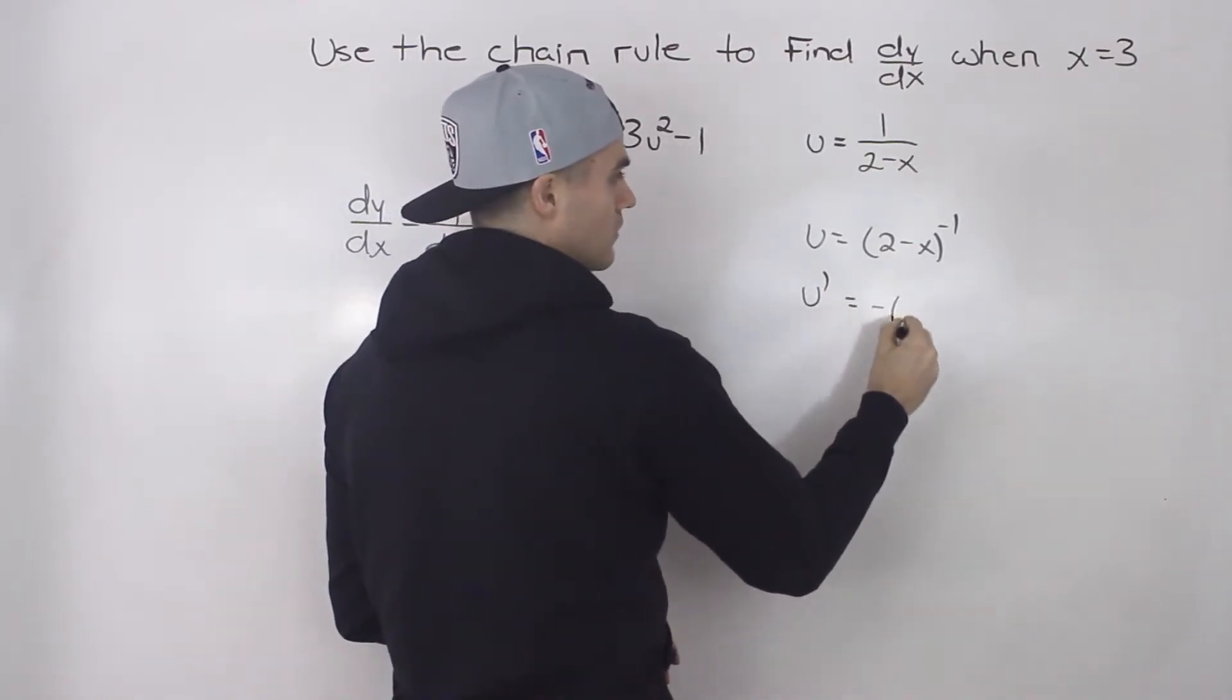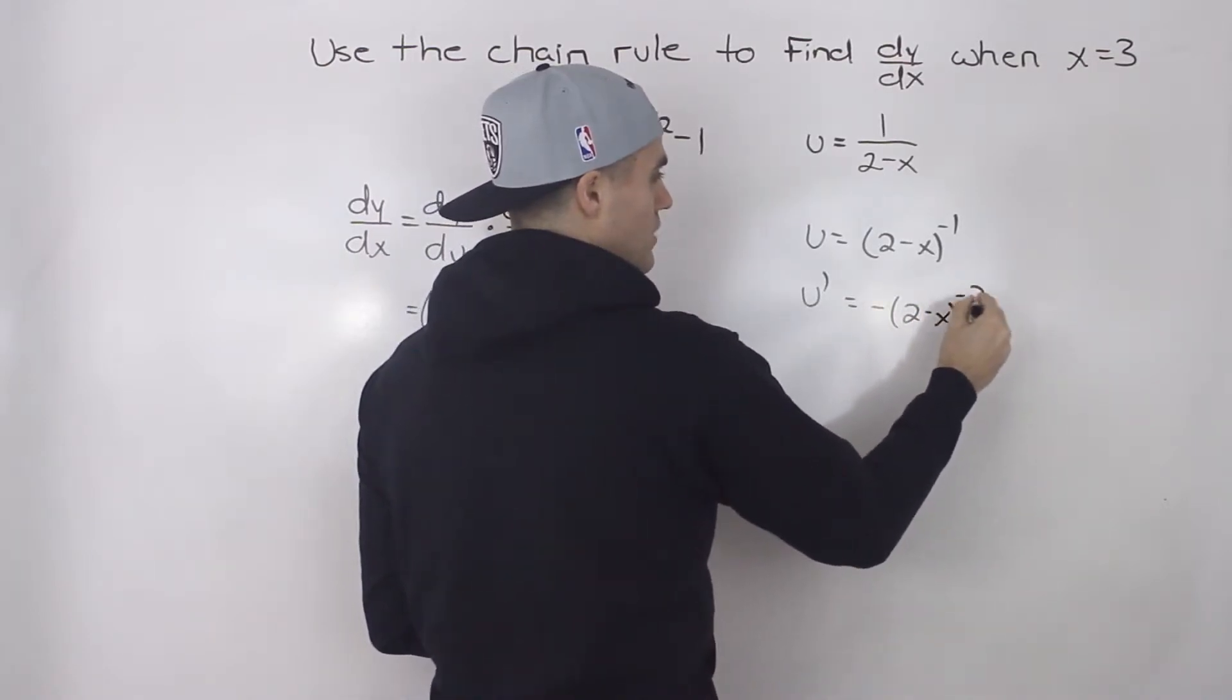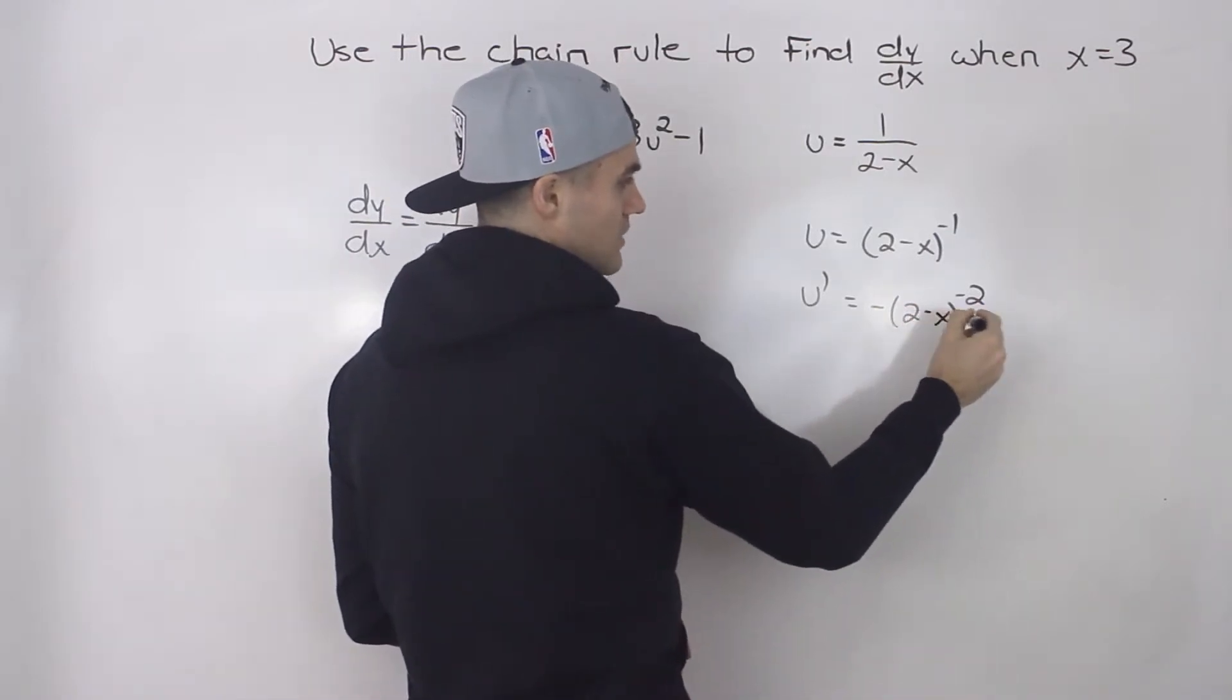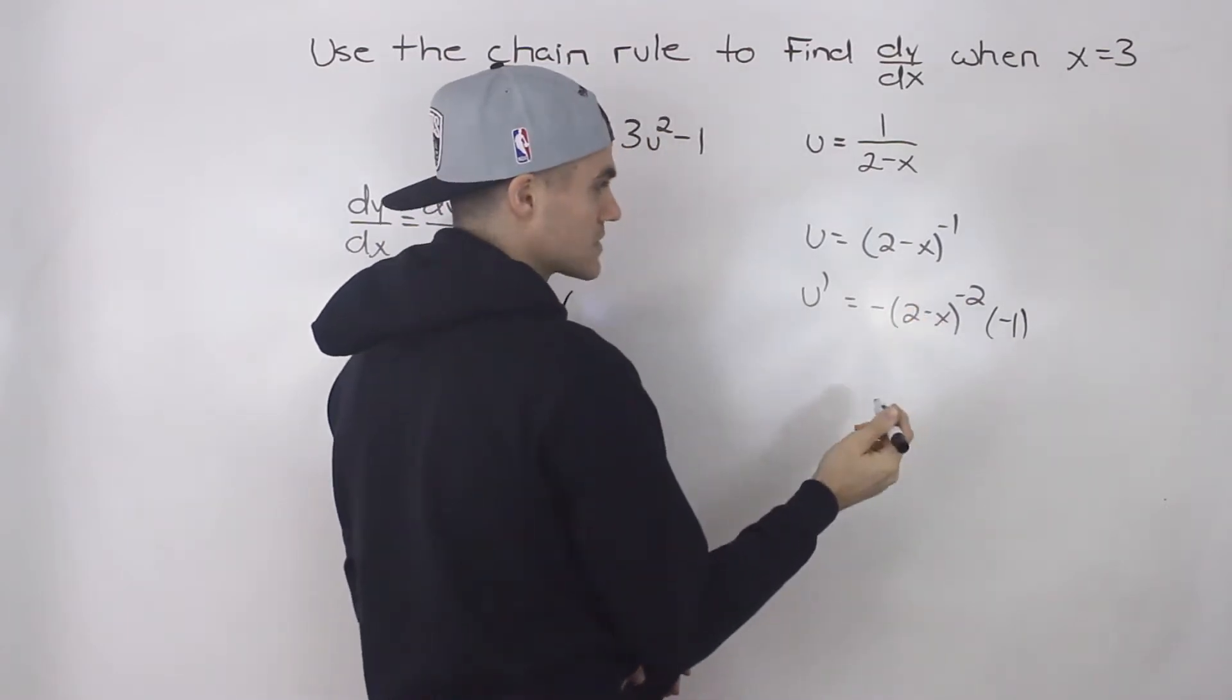We'd have 2 minus x, we would subtract 1 from the exponent. And then we would multiply it by the derivative of the inside. The derivative of 2 minus x is just negative 1. We derive that negative x.